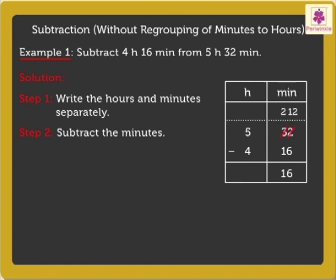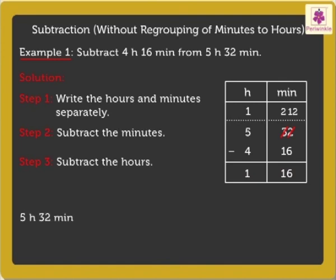Step 3: Subtract the hours. Subtracting 4 Hours from 5 Hours, we get 1 Hour. We found the answer! 5 Hours 32 Minutes minus 4 Hours 16 Minutes is equal to 1 Hour 16 Minutes.